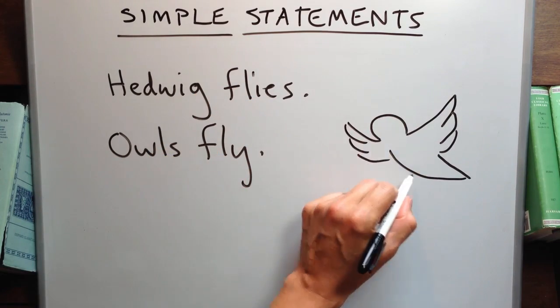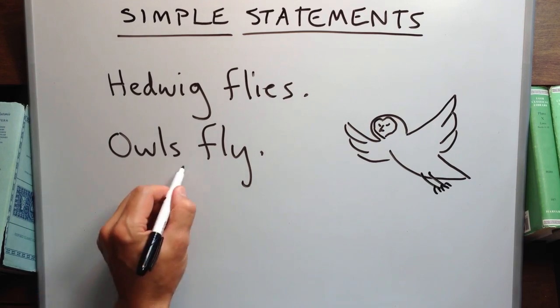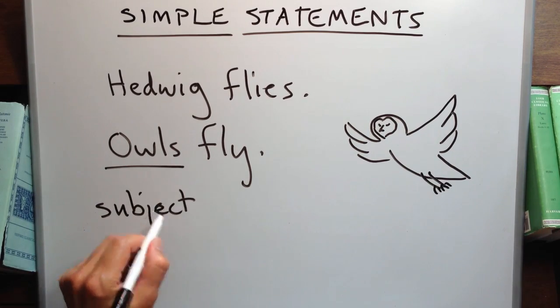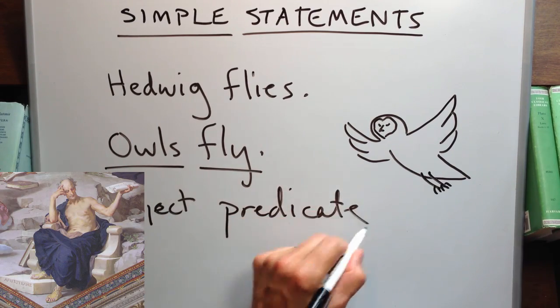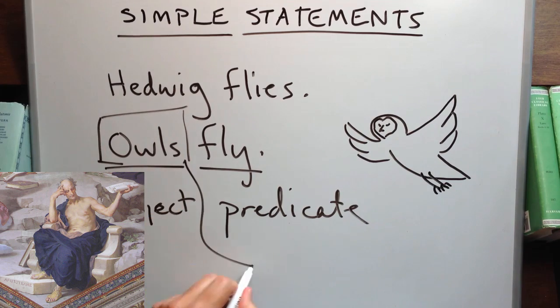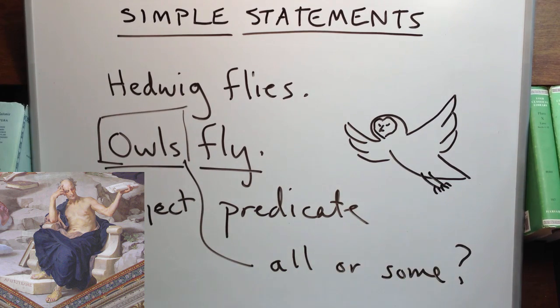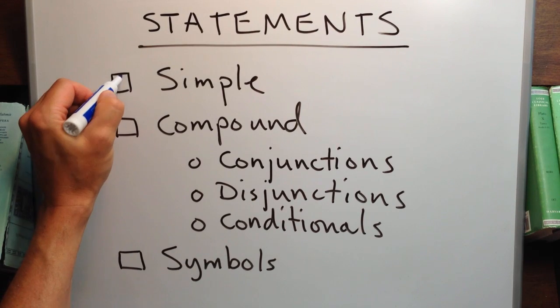Owls is ambiguous between all owls or some owls. Aristotle built a logical system around the difference between all or some predications. So much for simple statements.